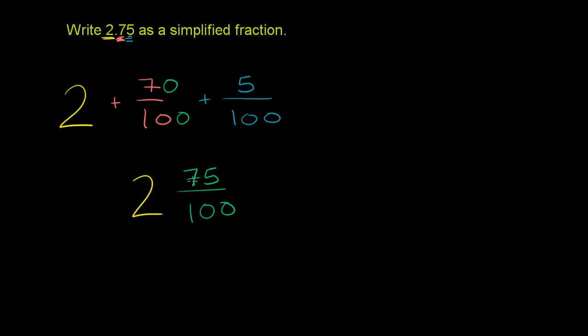75 divided by 25 is 3, and 100 divided by 25 is 4. So as a simplified mixed number, this becomes 2 and 3 fourths. After you do a lot of practice here and you just see a lot of numbers like this, it'll be almost second nature for you to say, oh, 2.75 is the same thing as 2 and 75 hundredths, which is the same thing as 2 and 3 fourths.